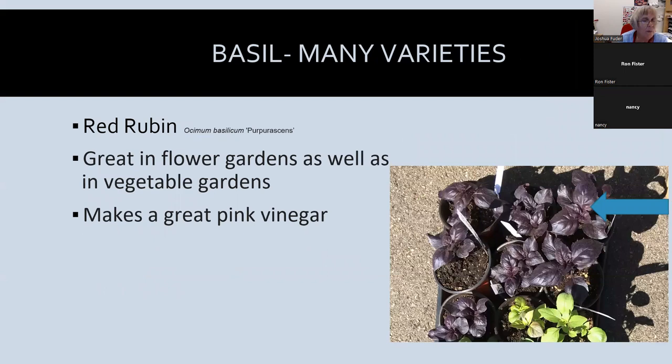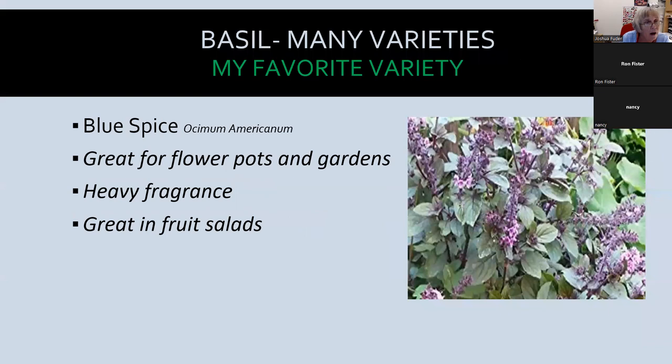We talked about Red Reuben being great in flower gardens and vegetable gardens — it makes a great pink vinegar too. I'm making some right now; it's not hard, takes a few weeks, and the longer you let it sit the more basil flavor you get. You can even add a little garlic. It makes a unique gift. Blue Spice basil probably has the heaviest fragrance of all the basils, looks great in flower pots and gardens, and pairs very well with fruit.